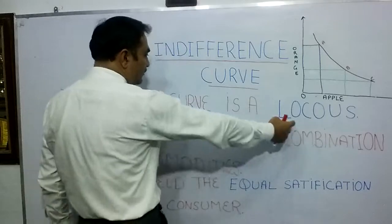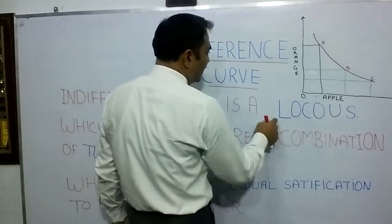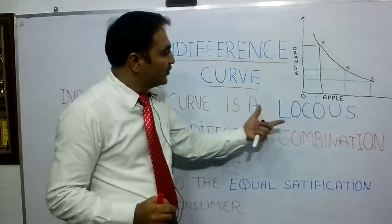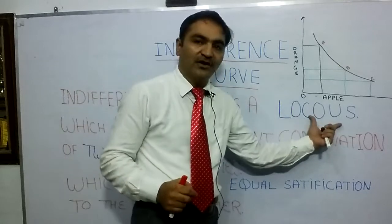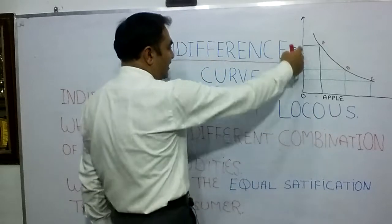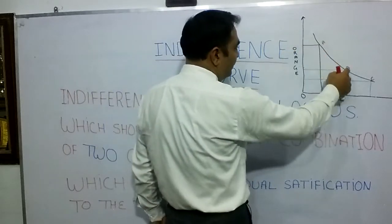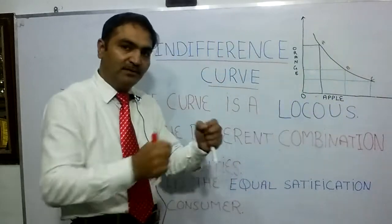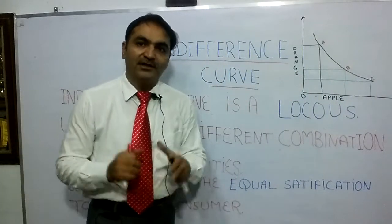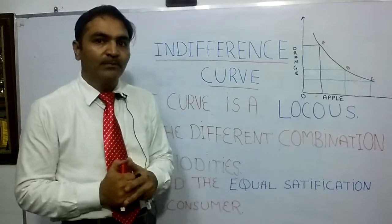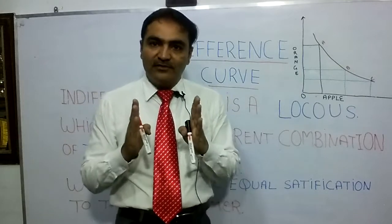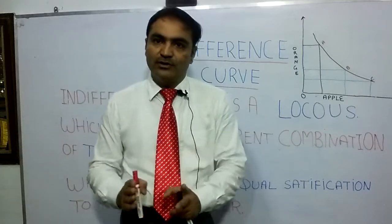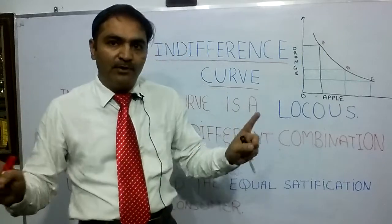What is a locus? Locus means the path of points — joining the path of points is called a locus. Suppose in the diagram we have point A, point B, point C, and joining all three points gives us a path, and that path is called locus. Indifference curve is a locus which shows the different combinations of two commodities.